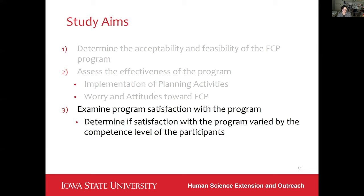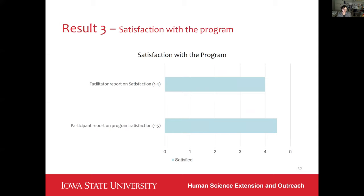The third aim of this study was to examine program satisfaction, and whether satisfaction varied by the competence level of participants. Including both facilitator and participant reports: participant-reported program satisfaction scored approximately 4.5 on their scale, while facilitator satisfaction scored on a one-to-four scale. As you can see, both facilitators and participants were satisfied with the program.